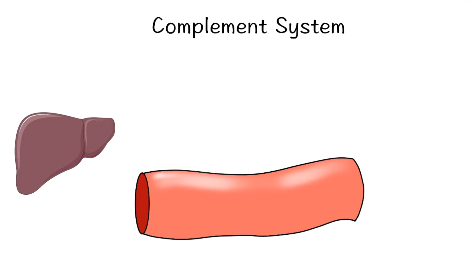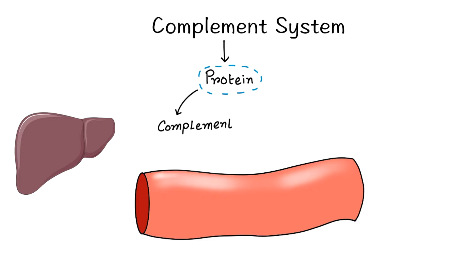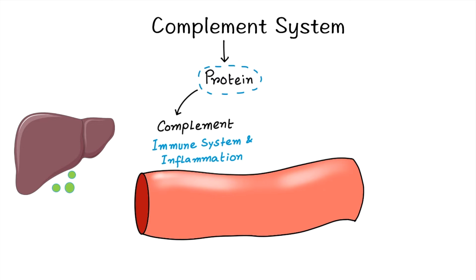Today we will discuss the complement system. The complement system consists of a series of proteins which complement or augment the immune system and inflammatory reaction. Complement proteins are produced by liver cells and constantly secreted into the blood circulation.